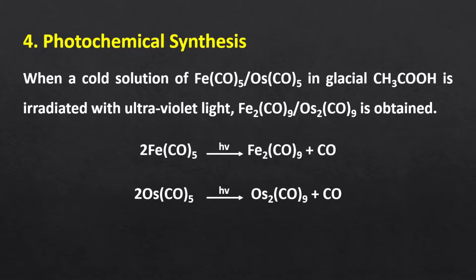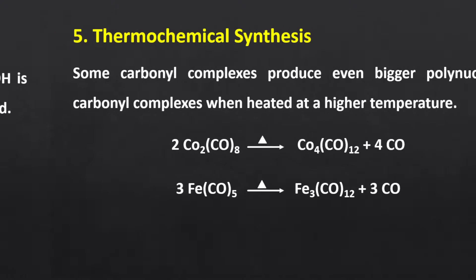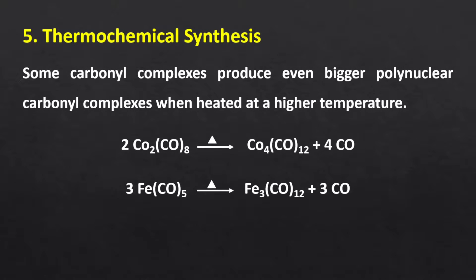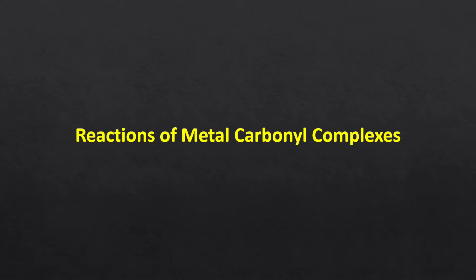The next method is photochemical synthesis, which is useful for the preparation of dinuclear carbonyls from mononuclear carbonyls. When a cold solution of iron pentacarbonyl or osmium pentacarbonyl in glacial acetic acid is irradiated with ultraviolet light, the corresponding dinuclear carbonyl complexes are obtained. Sometimes these dinuclear complexes can produce even bigger polynuclear carbonyl complexes when heated at higher temperatures.